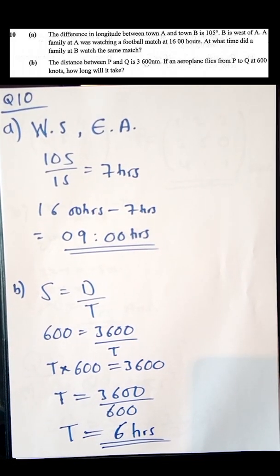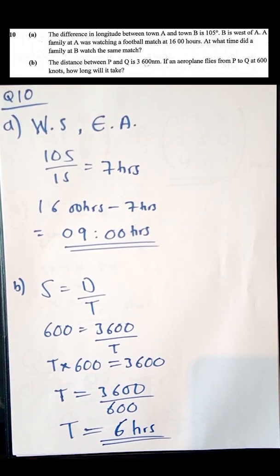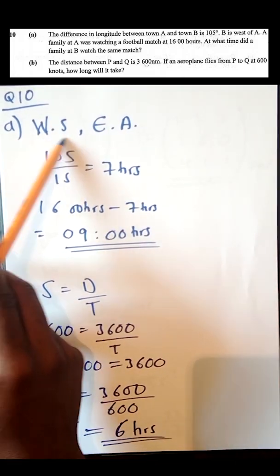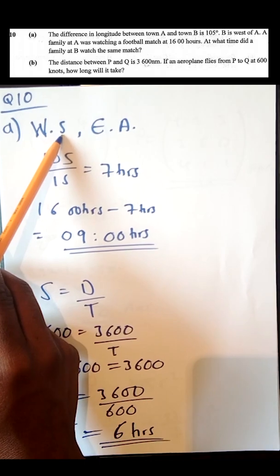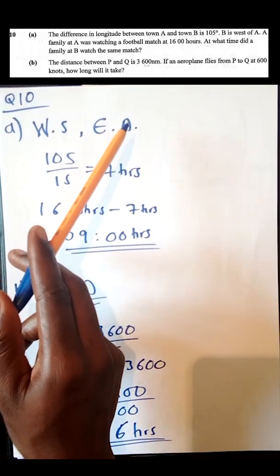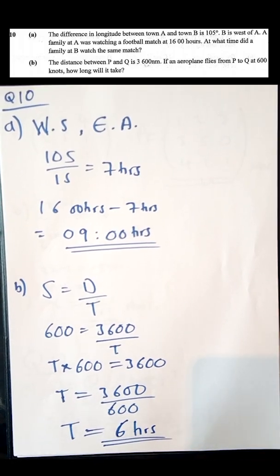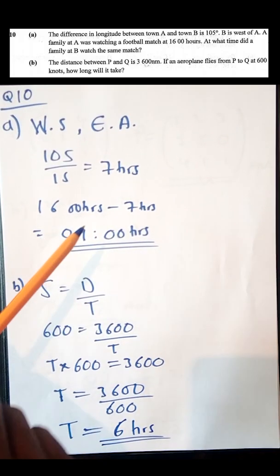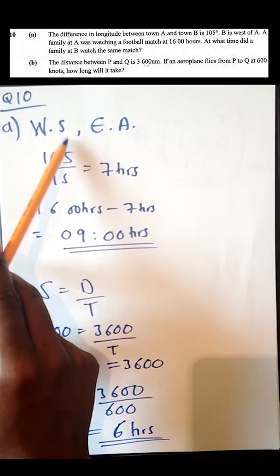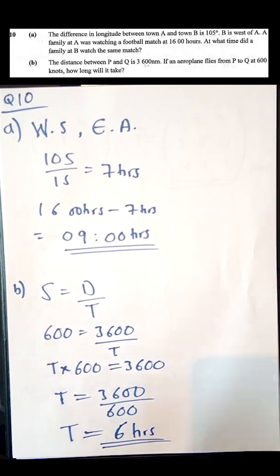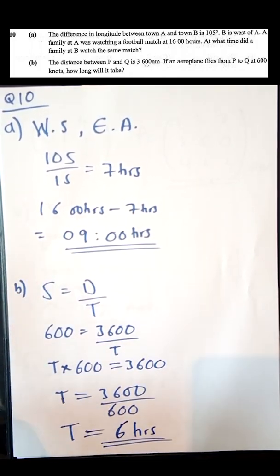Now, do we subtract or add from 16 hours? The tip: when going west, you subtract; when going east, you add. Since town B is west of town A, we subtract. 16 hours minus 7 hours gives 9 hours. So the family at B watched the match at 9 hours.